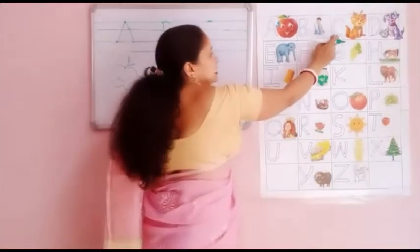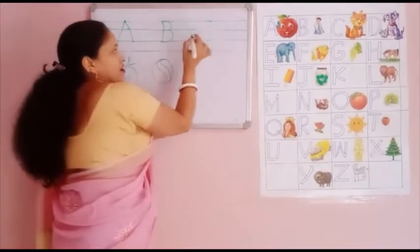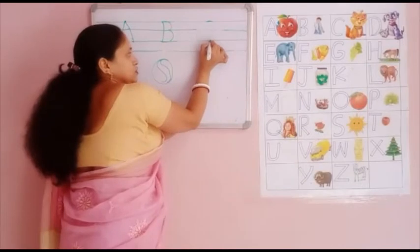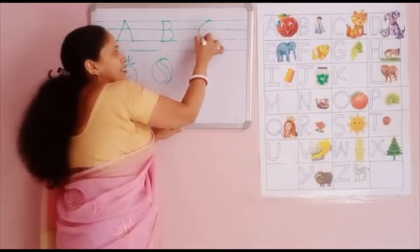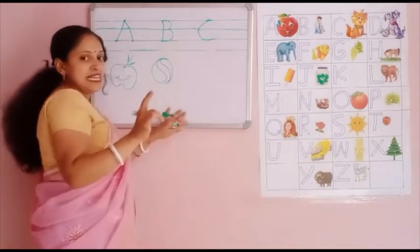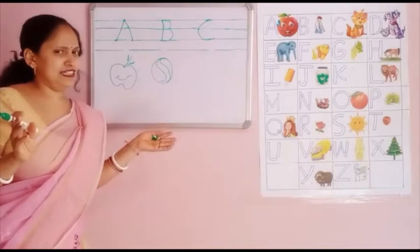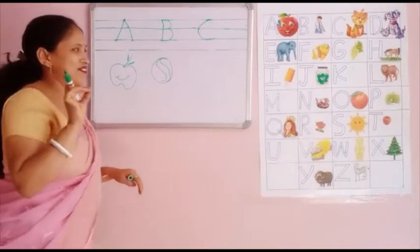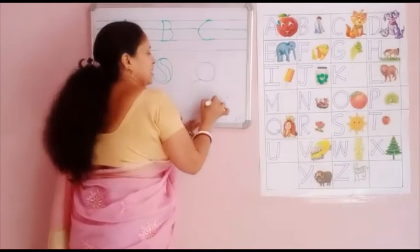Now next word is C. C for cat. Now one, two, three dots. Curve. Again curve. C. C for cat. Now what does the cat say? It says meow, meow. Now C for cat.